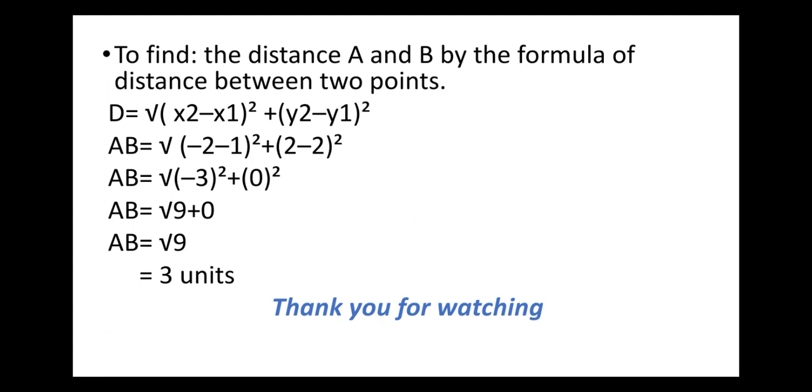0² = 0, so AB = √(9 + 0). Any number added to 0 is the same number, so AB = √9 = 3 units.